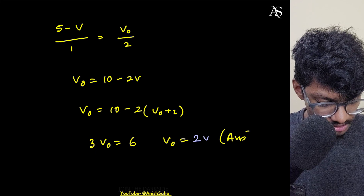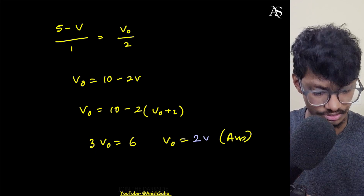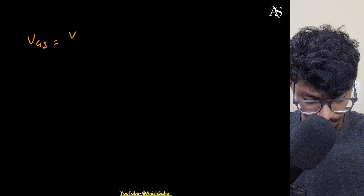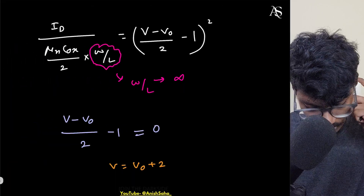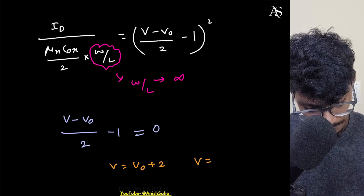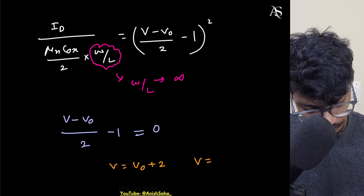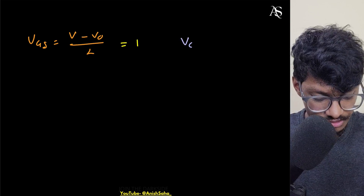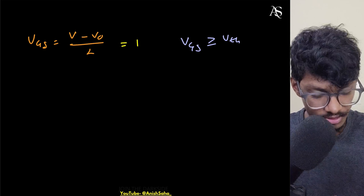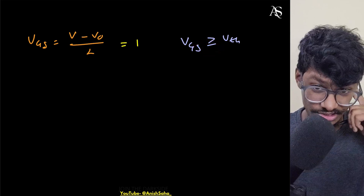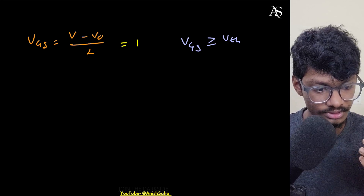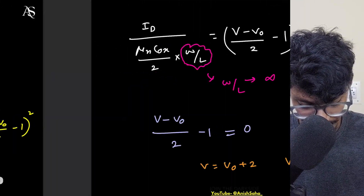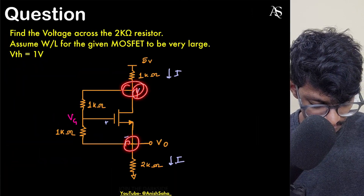Now let's cross-check that the MOSFET is indeed in saturation. VGS = (V − Vo)/2. V = Vo + 2 = 4 volts, so VGS = (4 − 2)/2 = 1 volt. For saturation, VGS must be ≥ Vth = 1V — it's right at the edge of saturation. Now checking VDS: VDS = V − Vo.